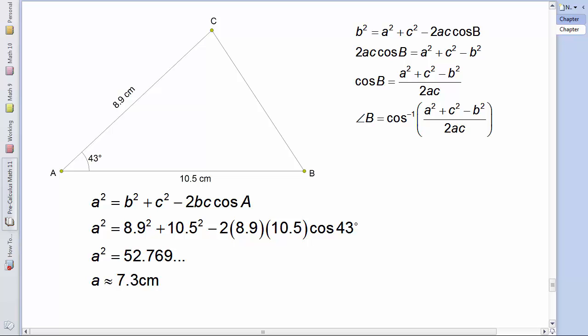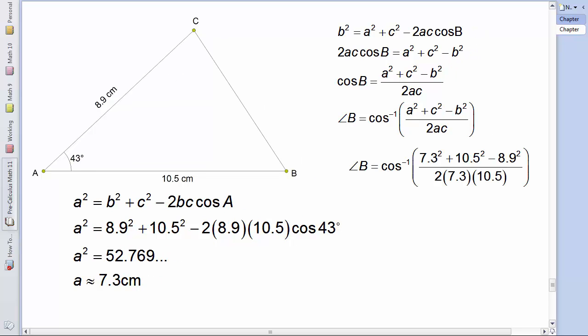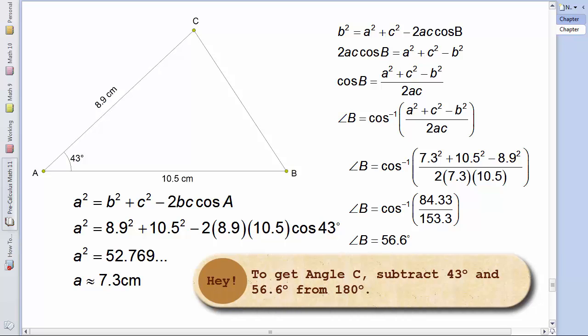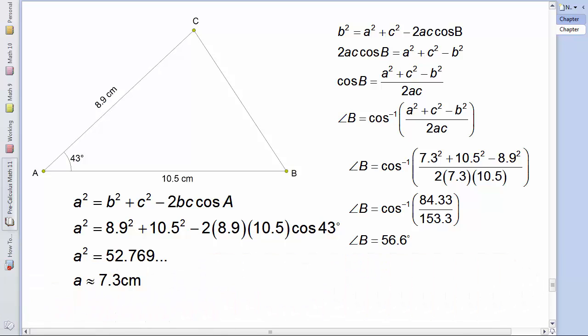Now, let's substitute in our values of A, B, and C so that we can solve. When I calculate this, I like to just take the top and calculate it first. Otherwise, I'm afraid that I might mess up with my order of operations and get a crazy number. So, the first thing I'm going to do is 7.3 squared plus 10.5 squared minus 8.9 squared getting 84.33. Then I multiply the bottom getting 153.3. And now, I'll calculate the inverse cosine of that ratio getting 56.6. So, that's using the cosine law both to find a side and to calculate an angle.